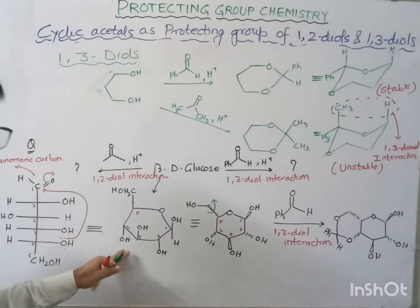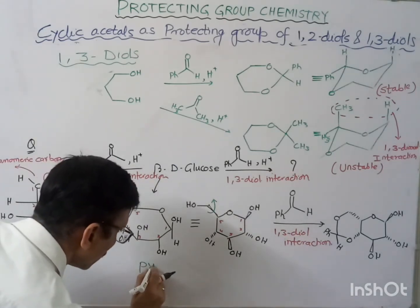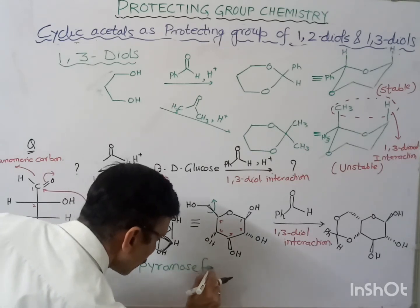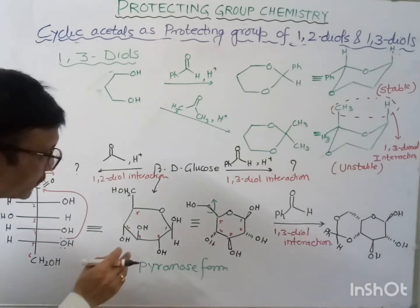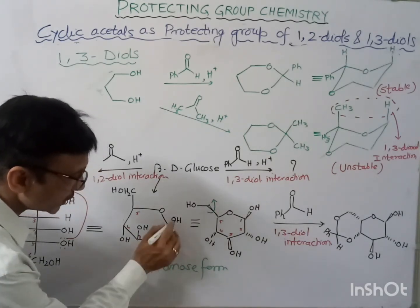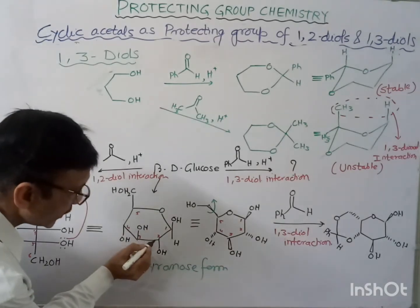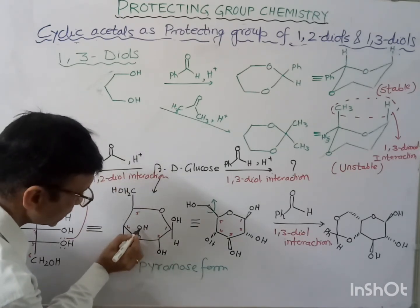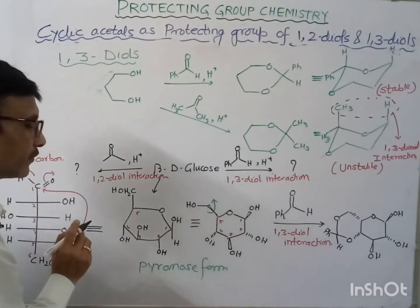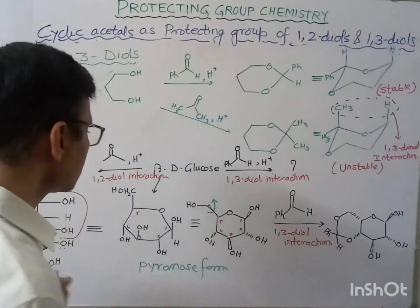We will not have the 1,2-diol interaction in the pyranose form of glucose. In the pyranose form, 1,2-diol interaction is not possible because the OH groups on adjacent carbons are above and below the plane — they are in different planes. Similarly, other adjacent pairs are also in different planes, so 1,2-diol interaction is not possible in pyranose form.